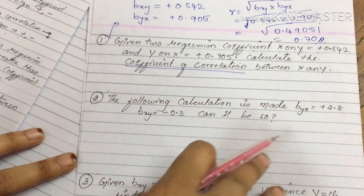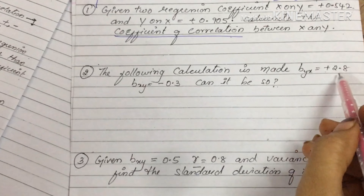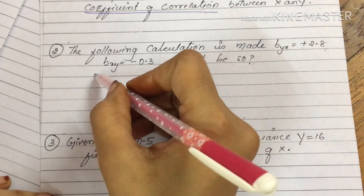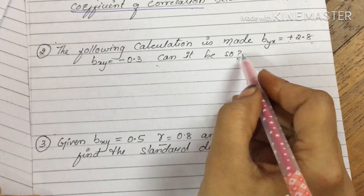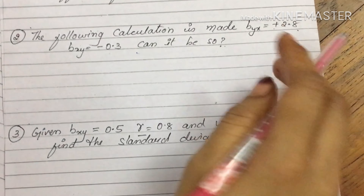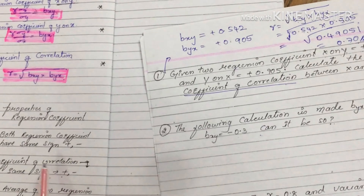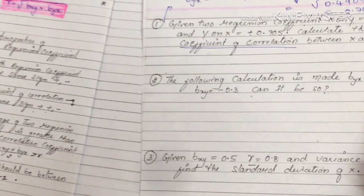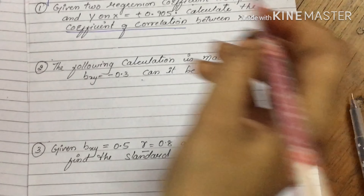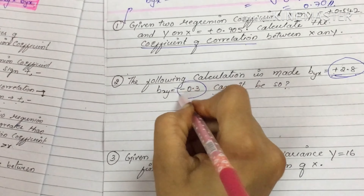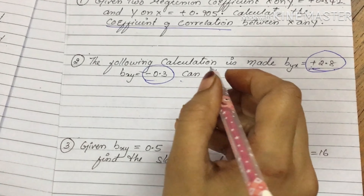Next problem: the following calculation is made — byx = plus 2.8, bxy = minus 0.3. Can it be so? Check property one: both regression coefficients must have the same sign. Here one is plus 2.8 and the other is minus 0.3 — the signs are different. So, no, it cannot be — we cannot proceed ahead.